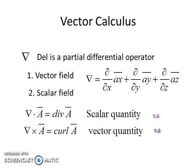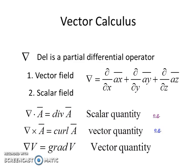When the del operator operates on a vector and we take a curl or cross product, the operation is called curl of a vector and the result is a vector quantity. Similarly, when we operate this del operator on a scalar field, the result is a vector quantity and the operation is called gradient.